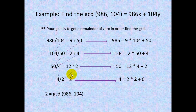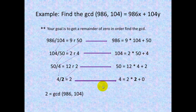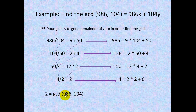We take that remainder and make it the divisor and make our divisor the dividend. We get 4 divided by 2 equals 2. Rewriting that equation, we get 4 equals 2 times 2 plus 0. We finally have our zero, so we have our greatest common divisor, which is 2. The greatest common divisor of 986 and 104 is 2.